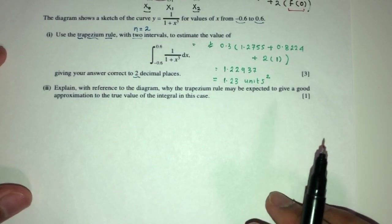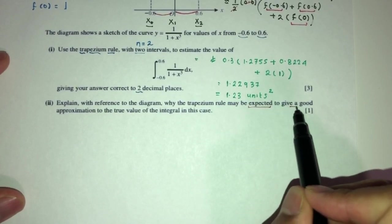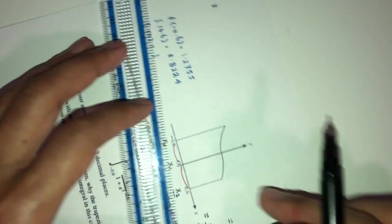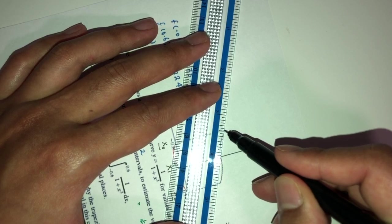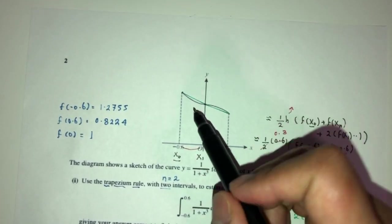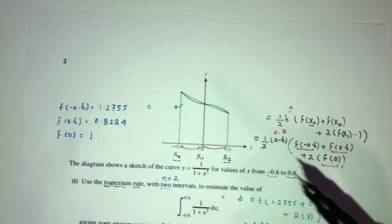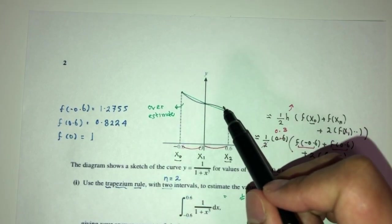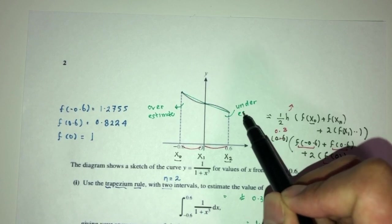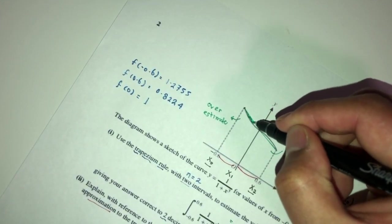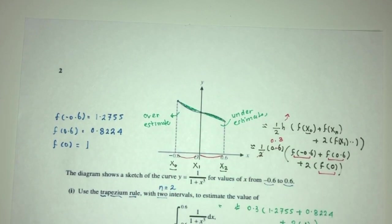For part 2, we have to explain with reference to the diagram why the trapezium rule may give a good approximation. Observing the diagram: for the first interval, the trapezium overestimates, and for the second interval, it underestimates. The extra area and the missing area cancel each other out, providing a good approximation for the integral.